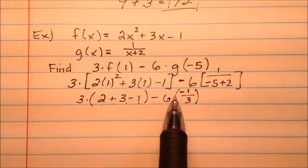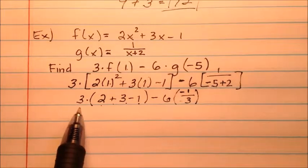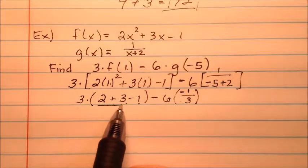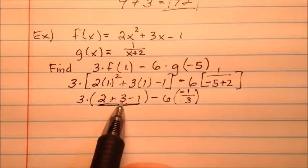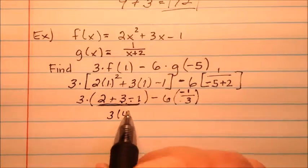You can either put it on top or out front, but we just don't like to leave negatives in the denominator. But at this point, that looks a lot better, so let's go ahead and simplify what's inside here. 2 + 3 is 5, minus 1 is 4, so 3 times 4.